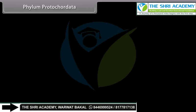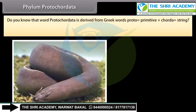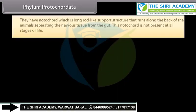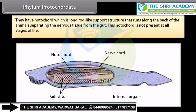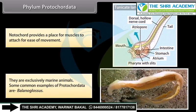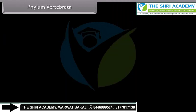Phylum Protochordata. The word protochordata is derived from Greek words: proto, meaning primitive, plus chorda, meaning string. The animals are bilaterally symmetrical, triploblastic, and have a coelom. They have a notochord, which is a long rod-like support structure that runs along the back of the animals, separating the nervous tissue from the gut. This notochord is not present at all stages of life. It provides a place for muscles to attach for ease of movement. They are exclusively marine animals. A common example of Protochordata is Balanoglossus.